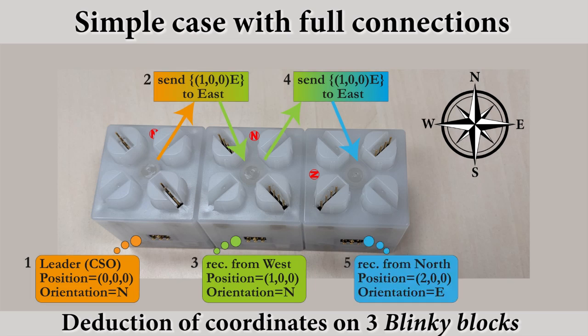With this new information, this blinky block can send the new position to all the neighbors but the sender. Then, the last robot on the right receives the message from its local north. It can deduce its orientation, which is east, relatively to the CSO.